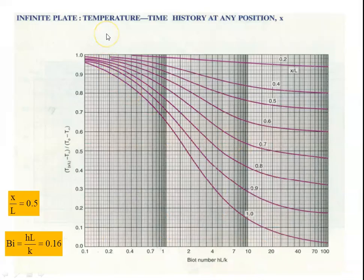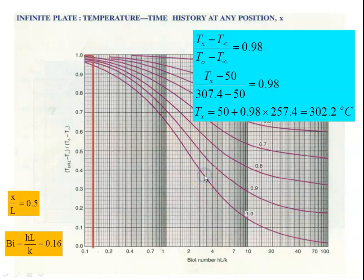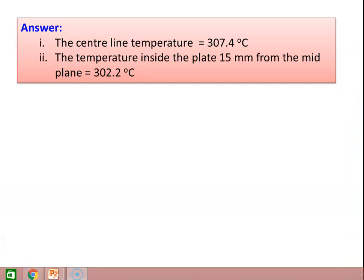To calculate the temperature at x/L = 0.5: Biot number = 0.16, x/L = 0.5. Draw a vertical line at Bi = 0.16 meeting the x/L = 0.5 line, giving a ratio of 0.98. So (T_x − T∞)/(T_O − T∞) = 0.98. T_x − 50 / (307.4 − 50) = 0.98. Therefore T_x = 50 + 0.98 × 257.4 = 302.2°C. Answer: the centerline temperature is 307.4°C and the temperature 15 mm from the mid-plane is 302.2°C.